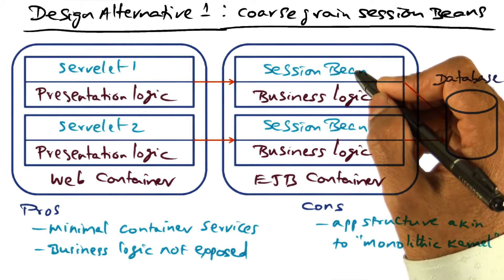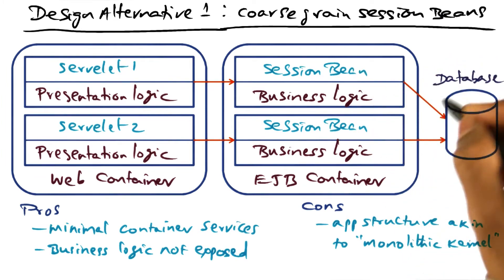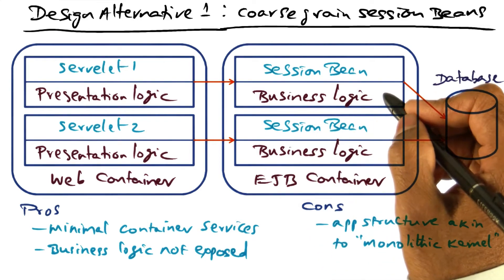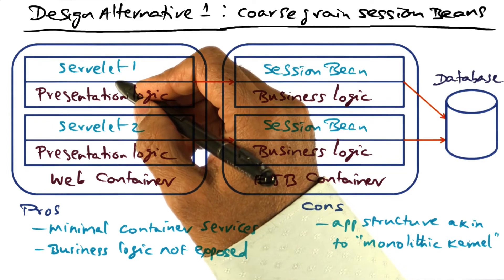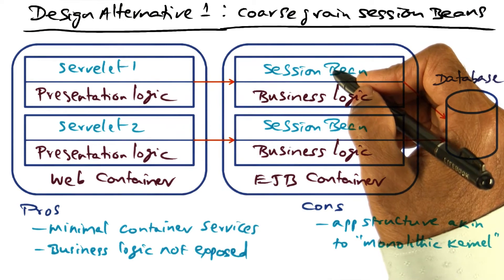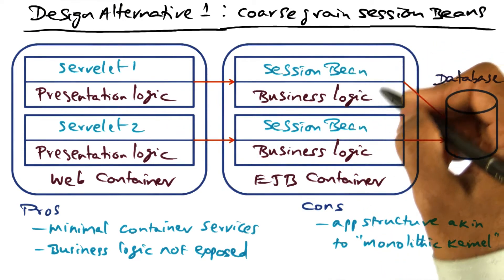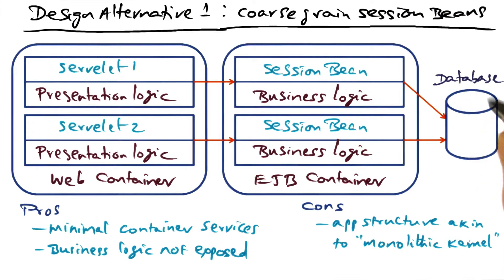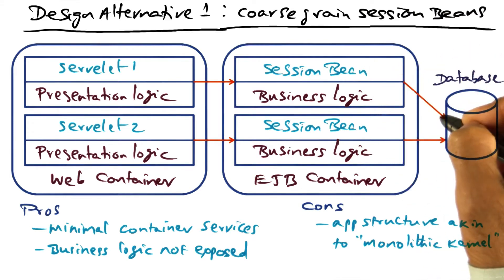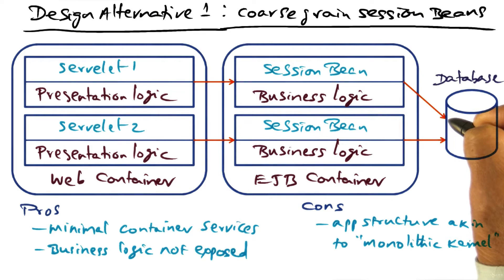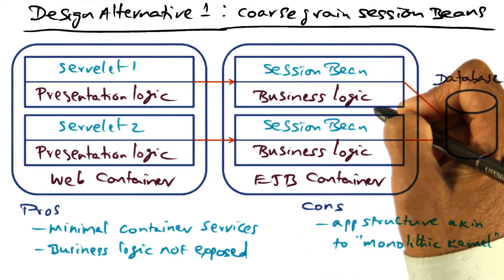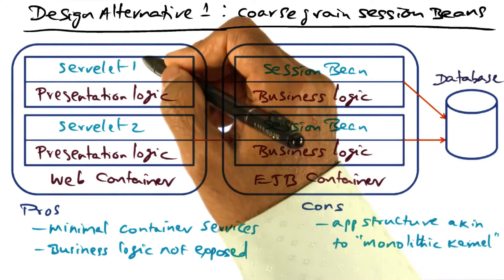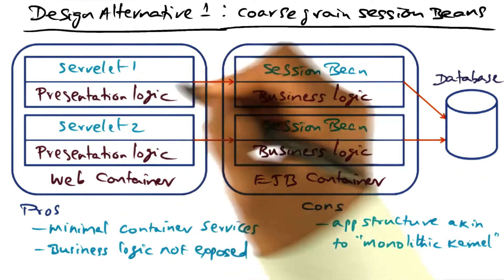Therefore, the session bean will handle the data accesses needed to the database in order for the business logic to do its thing. For example, if we are doing an airline reservation system and a client is requesting a particular booking, then the session bean is the one that contacts the database server to pull the specific dates and airline reservation information needed for the business logic to do the pruning and selection commensurate with what this particular client has requested.